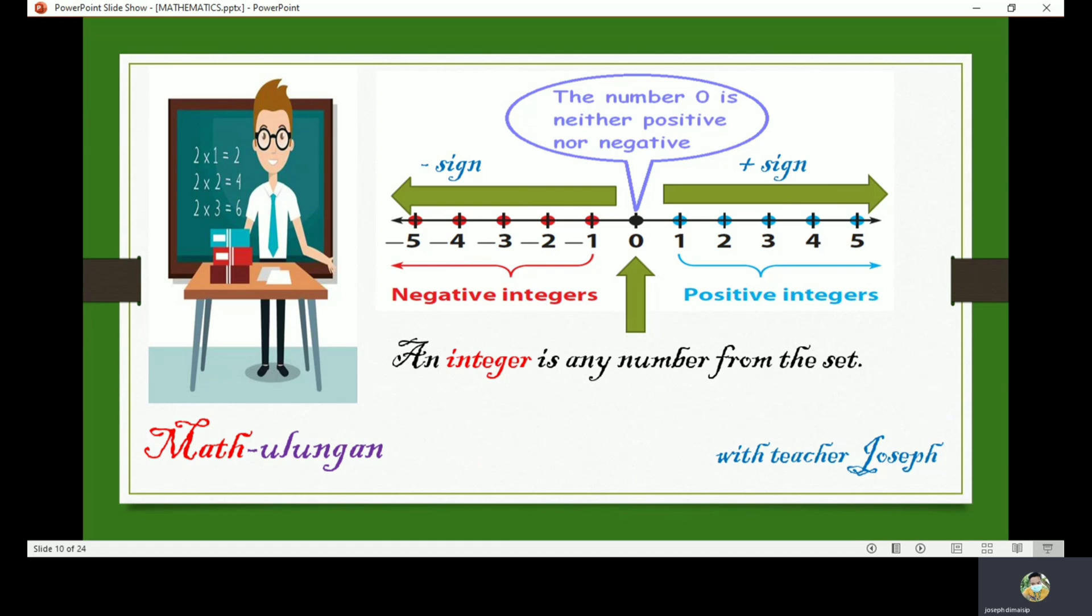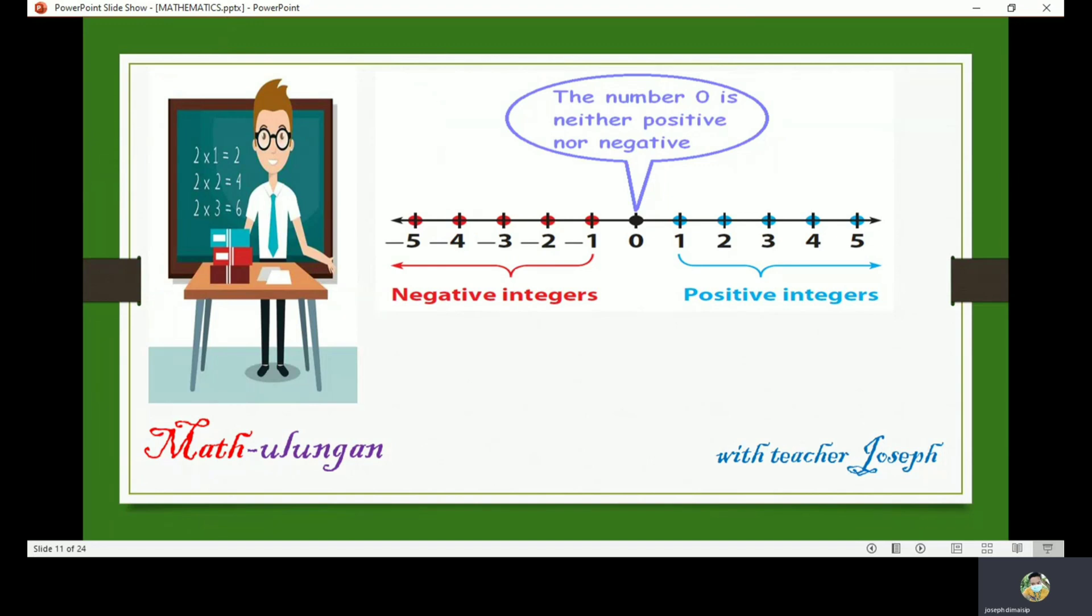Positive can be written without a plus sign. Since positive five and negative five are equally distant from zero, they are opposites. In the same manner, the opposite of negative three is positive three.